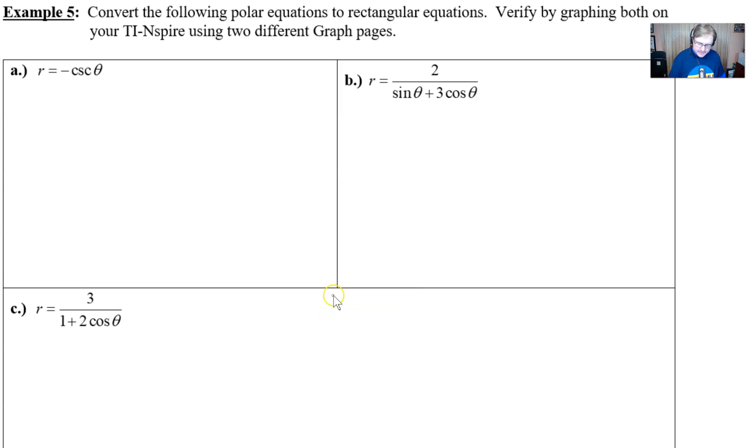But this is where things get kind of interesting because you really have to problem solve. You might even have to do a little trial and error in order to write this equation, r equals negative cosecant theta, into an equation that has only X's and Y's. It's pretty tricky. So the thing that I would do with part A: we like to have cosines and sines in equations as much as possible, because if we can ever pair r up with a sine, we know that that's a y value. If we can pair r with a cosine, we know that that is an x value.